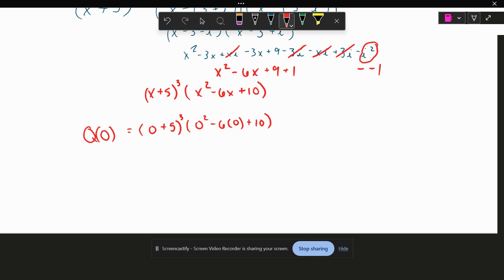So zero plus five is five, so this will give me 125. Zero minus zero plus 10, this will give me 10. And it's telling me that Q(0) right now is 1,250.